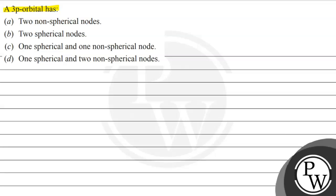So let us see this question's key concept. According to the question, we can see nodes that we have been able to see. So let us see — the key concept will be nodes only. For this, we should know what nodes are.